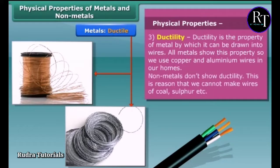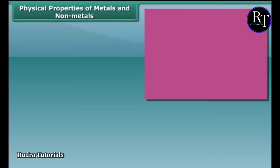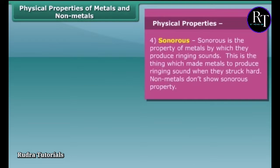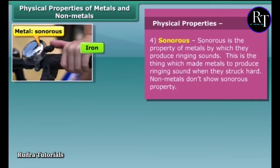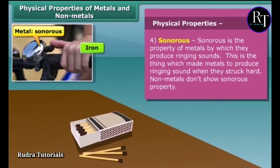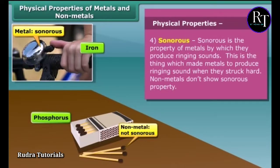Non-metals don't show ductility. Now let's talk about another property of metals — that is sonorous. Metals produce ringing sounds when struck, so they are said to be sonorous. Materials other than metals are not sonorous.